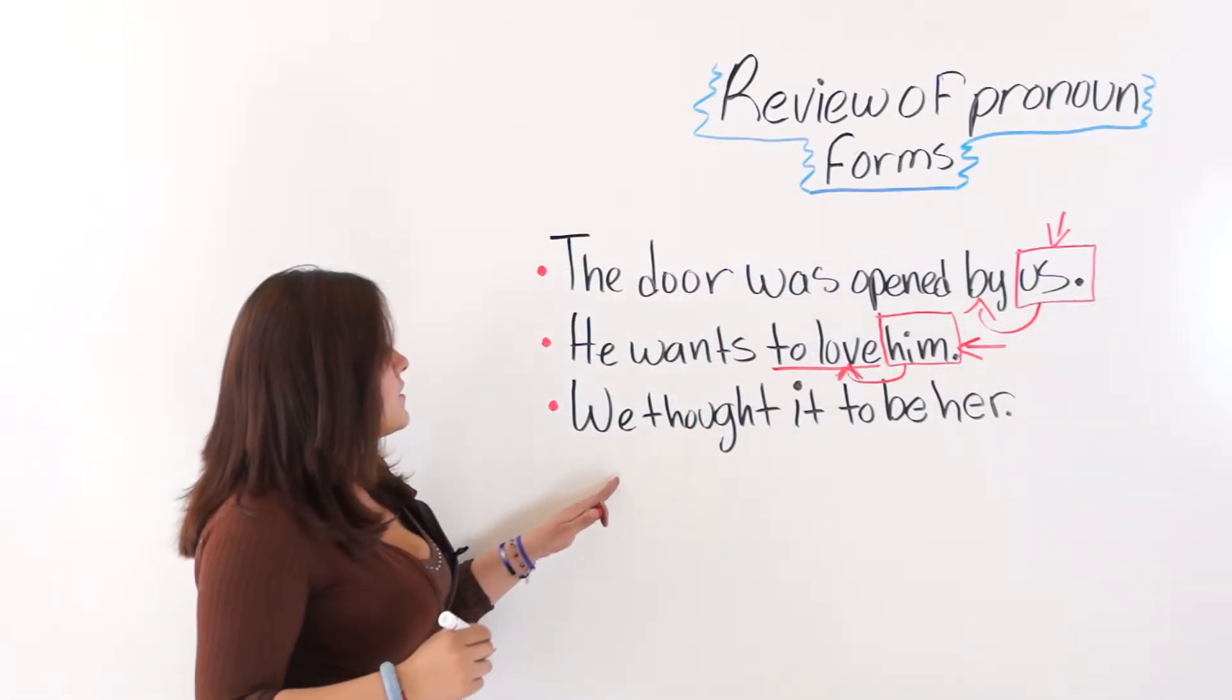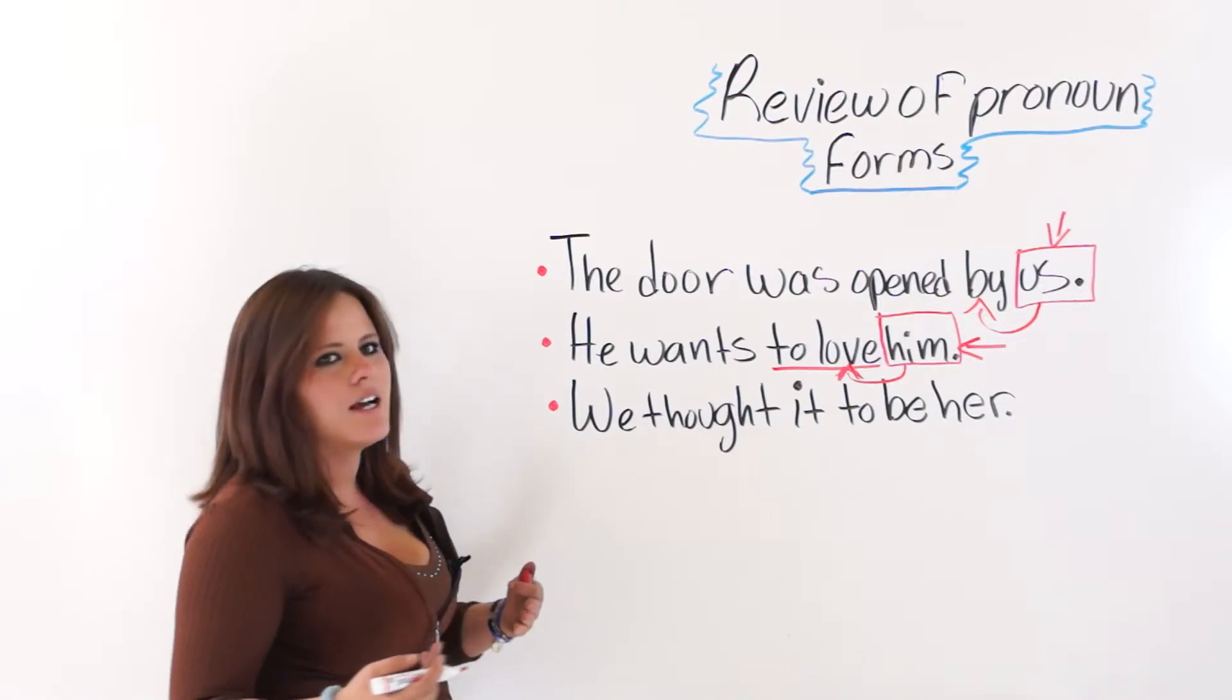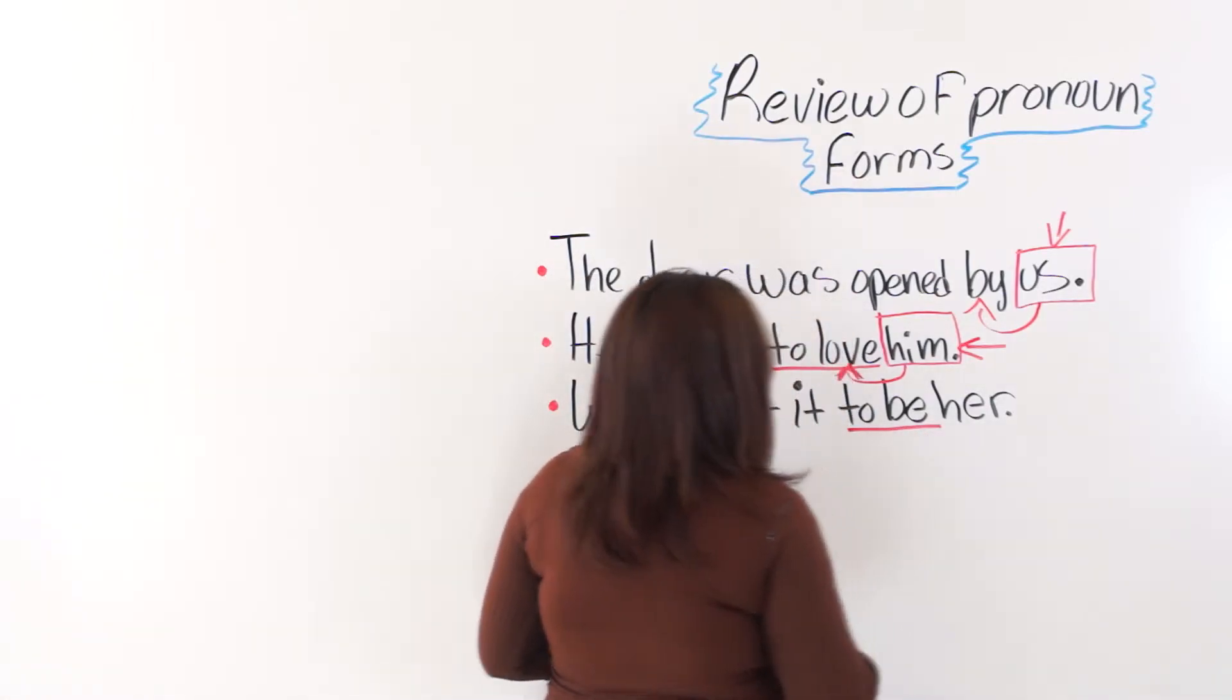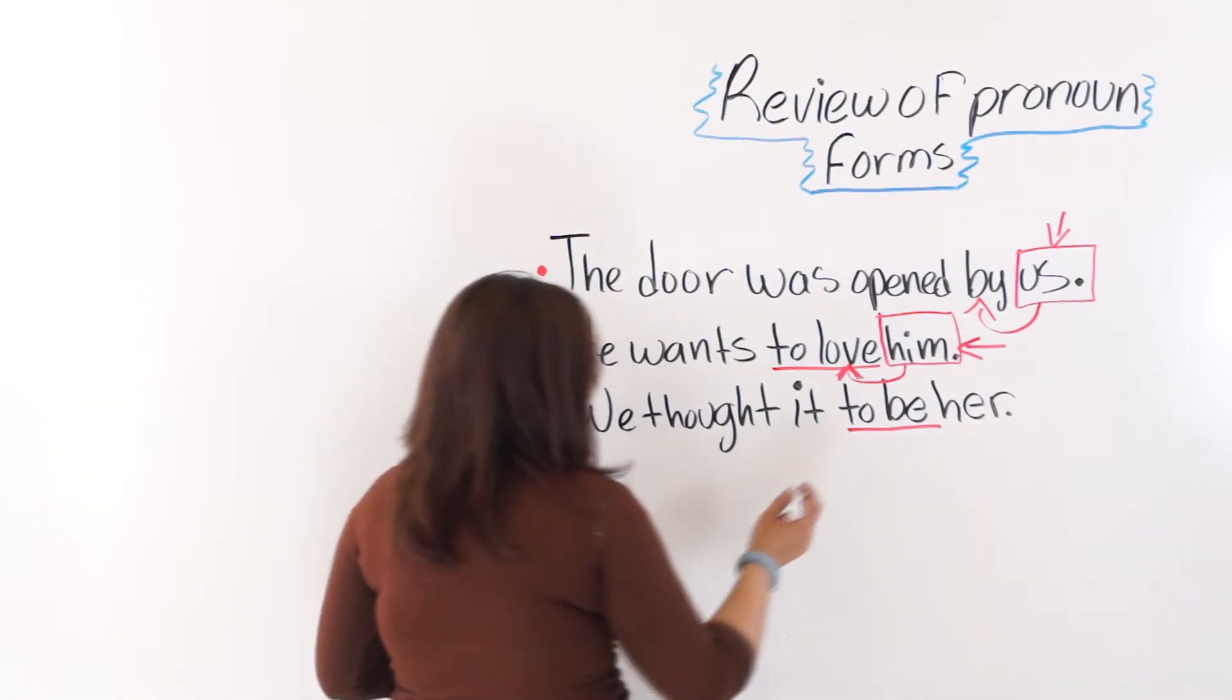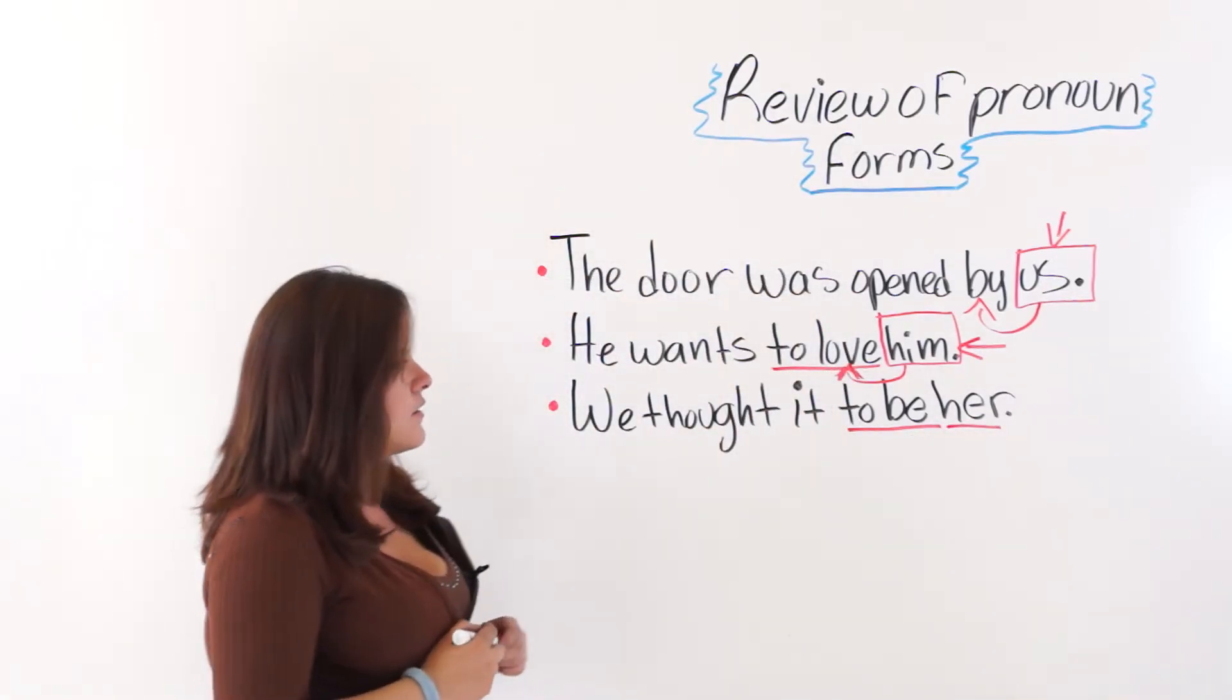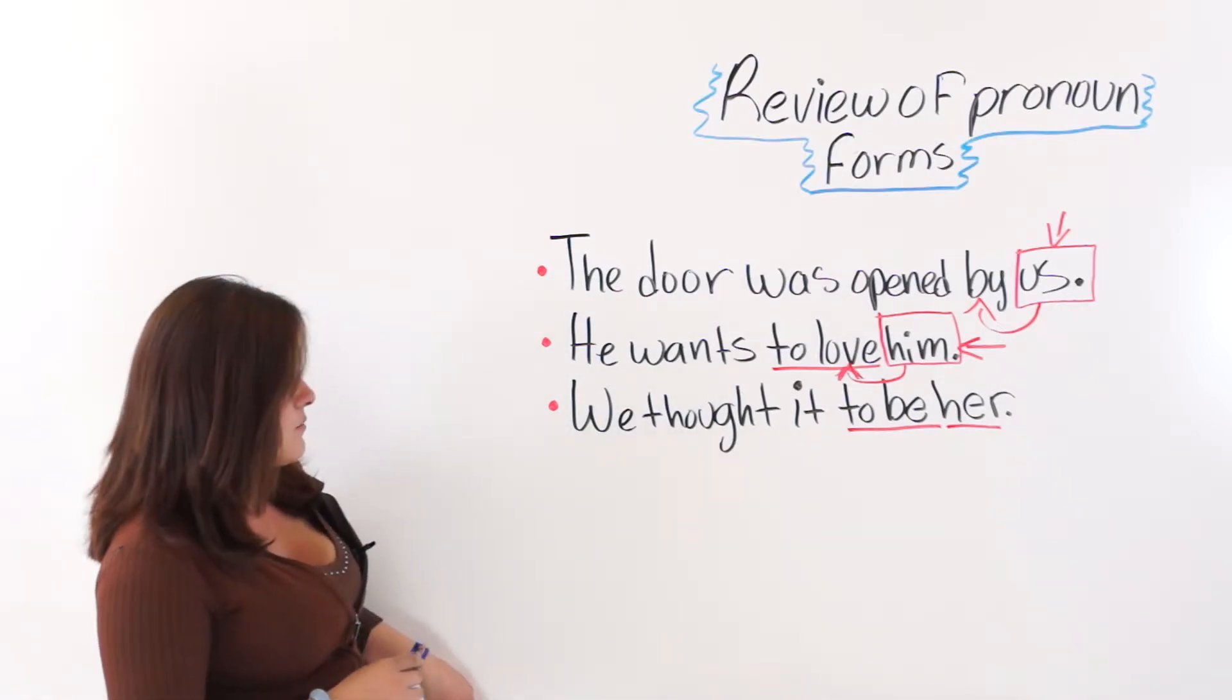And the last one says, he thought it to be her. Now we have a verb be infinitive with its subject. He thought it to be her.